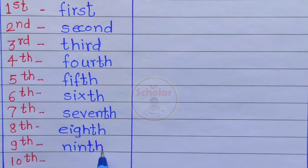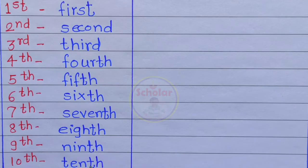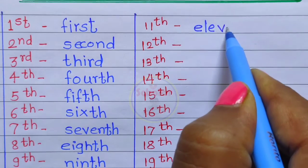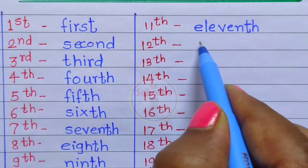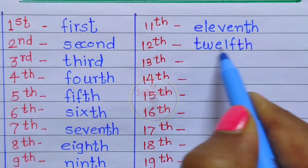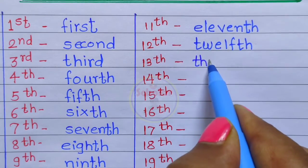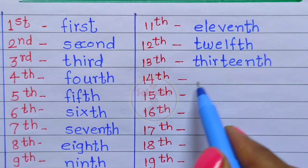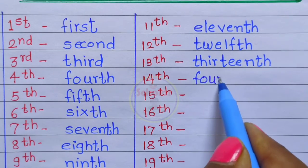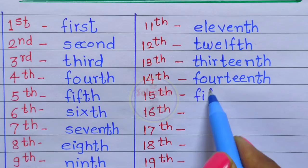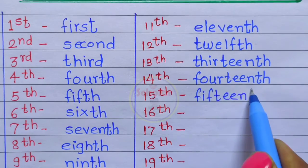Ninth — N I N T H — ninth. Tenth — T E N T H — tenth. Eleventh — E L E V E N T H — eleventh. Twelfth — T W E L F T H — twelfth. Thirteenth — T H I R T E E N T H — thirteenth. Fourteenth — F O U R T E E N T H — fourteenth.